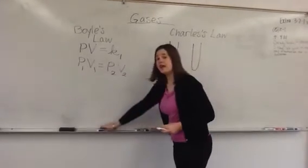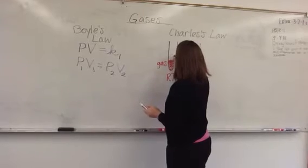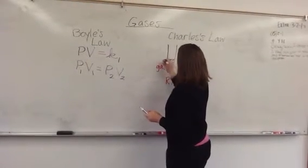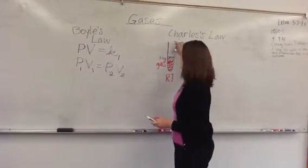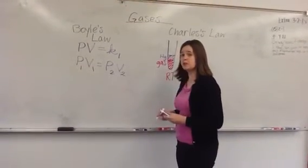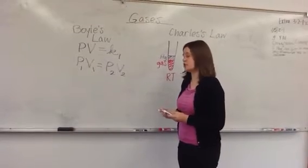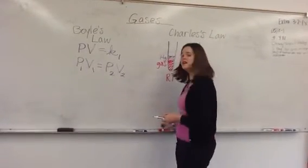On top of the gas, there was a layer of mercury to keep the gas in, but also to add pressure. The pressure of the atmosphere and the pressure of the mercury put a constant pressure on the gas.